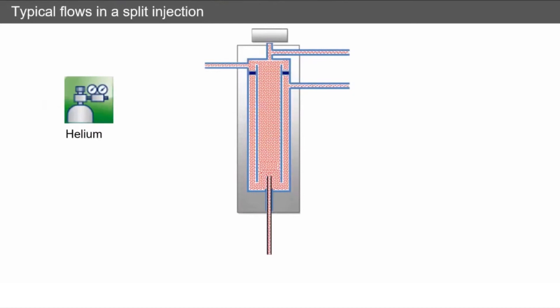So typical flows in a split injection: we've got our carrier gas inlet which would be say 56 milliliters per minute, septum purge which is 5 milliliters per minute, which is just like I said, getting rid of things like septum bleed, etc. But coming out of our split vent we've got 50 milliliters per minute.